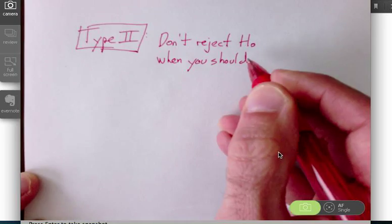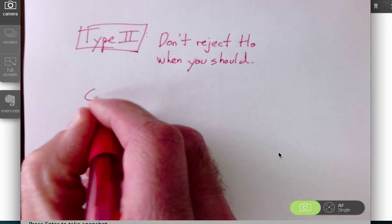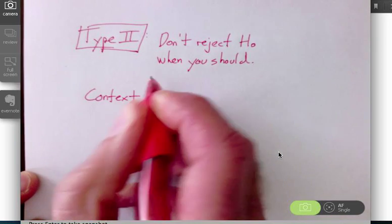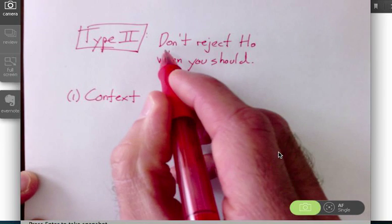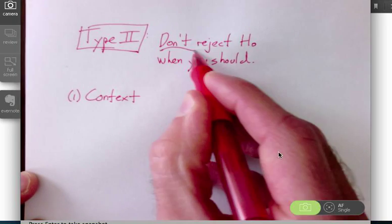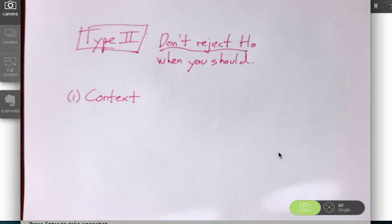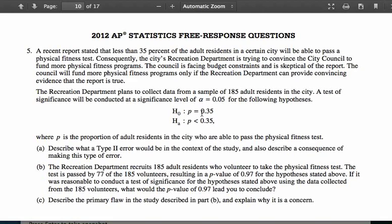To write about what this means in context, that's the first thing you need to do. That means you need to write about what happens if you don't reject the null hypothesis. If we don't reject the null hypothesis, then what does that tell us that we essentially believe we know about the alternative? That's what you should write about here.